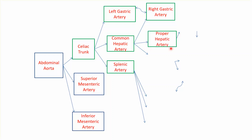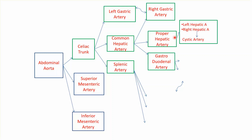The next branch is the proper hepatic, which actually goes to supply the liver. Then you have the gastroduodenal artery. The proper hepatic gives the left hepatic and right hepatic arteries. The right hepatic further gives the cystic artery, which supplies the gallbladder.